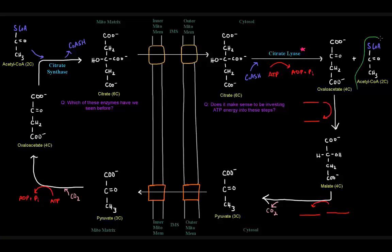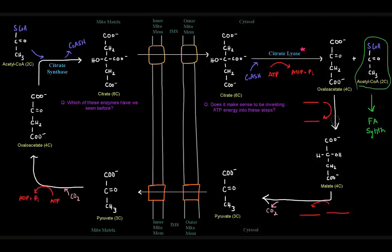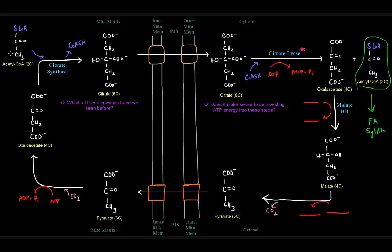Now we've got acetyl-CoA in the cytosol, which can go to fatty acid synthesis. The oxaloacetate is going to be turned into malate, catalyzed by an enzyme called malate dehydrogenase, which we've also seen before in the TCA cycle. In the TCA cycle, we went from malate to oxaloacetate in the last step, which required NAD+ and yielded NADH. This reaction is going backwards — so instead of making an NADH, we're going to be using an NADH, because this carbonyl group is getting reduced, consuming NADH and yielding NAD+.